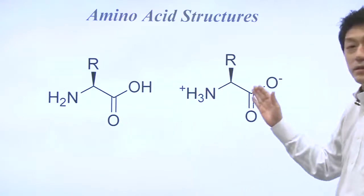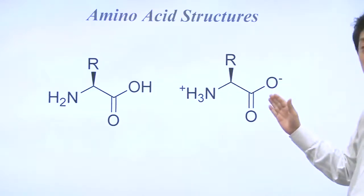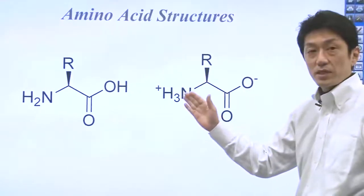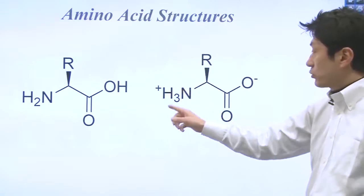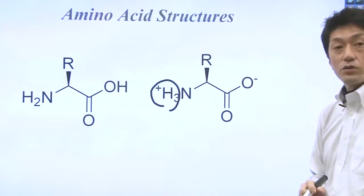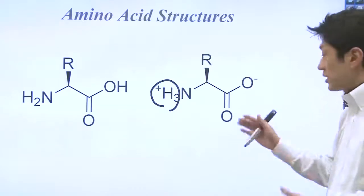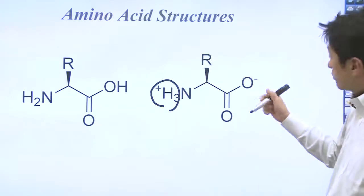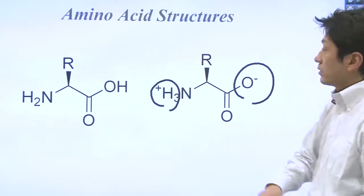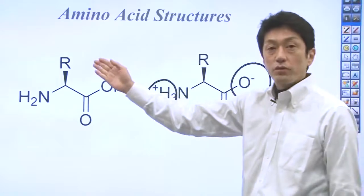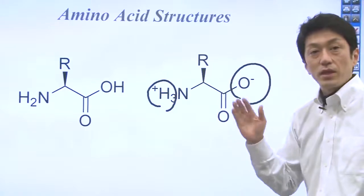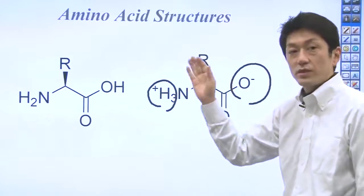Here is another way to describe amino acids. Since the amino group is basic, it can be protonated. And also, COOH is acidic, that's why it can be deprotonated. The R portion located in the center depends on the type of amino acid, and it's called a side chain.